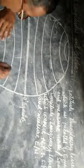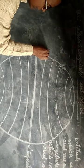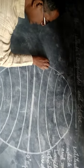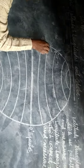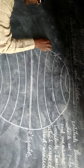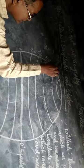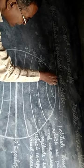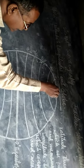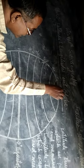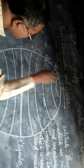इसकी टोटल संख्या 90 है Northern Hemisphere में और 90 है Southern Hemisphere में। तो यह 0 है, यह 15 नौर्थ, 30, 45, 60, 75, और यह 90 डिग्री को North Pole भी कहते हैं।